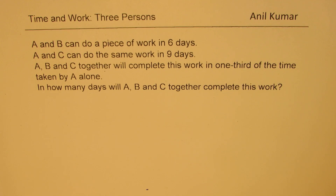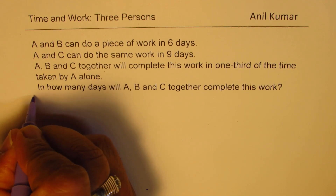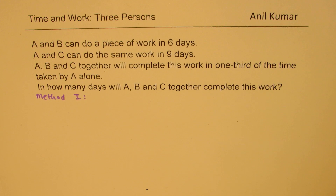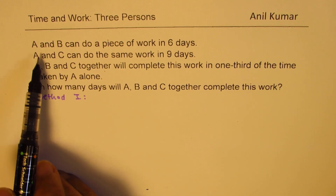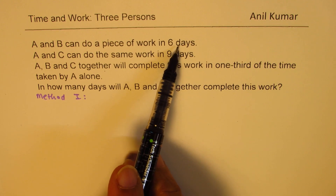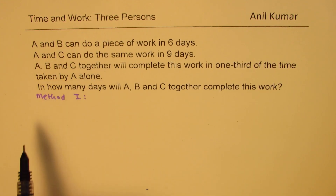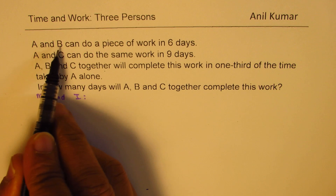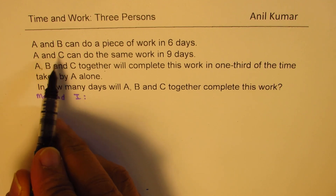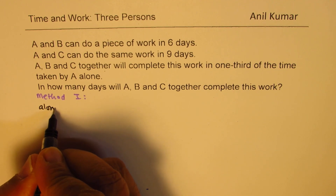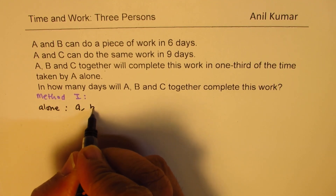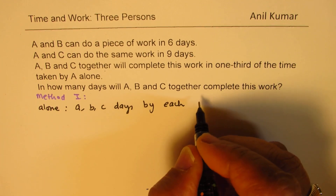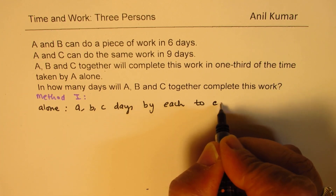So we'll follow two methods. Method number one — this is a standard method where we consider the time taken by each person, then calculate how much work is done by them together in one day. So let us say A takes A days, B takes B days, and C takes C days working alone to complete the work.